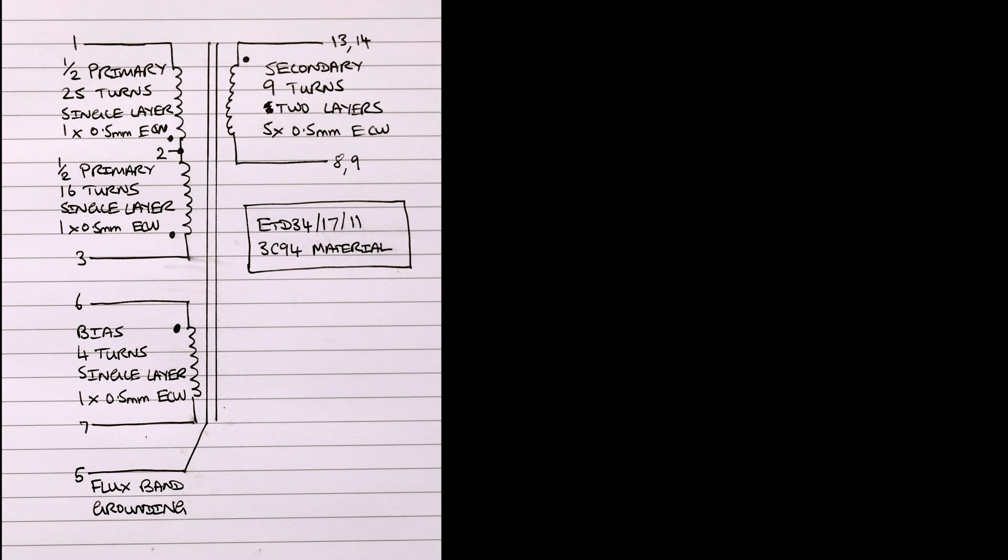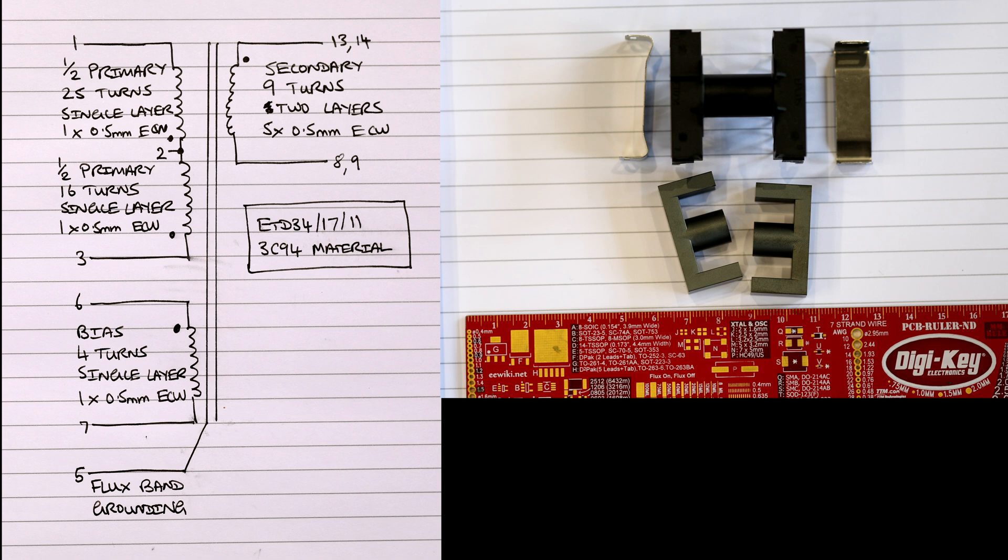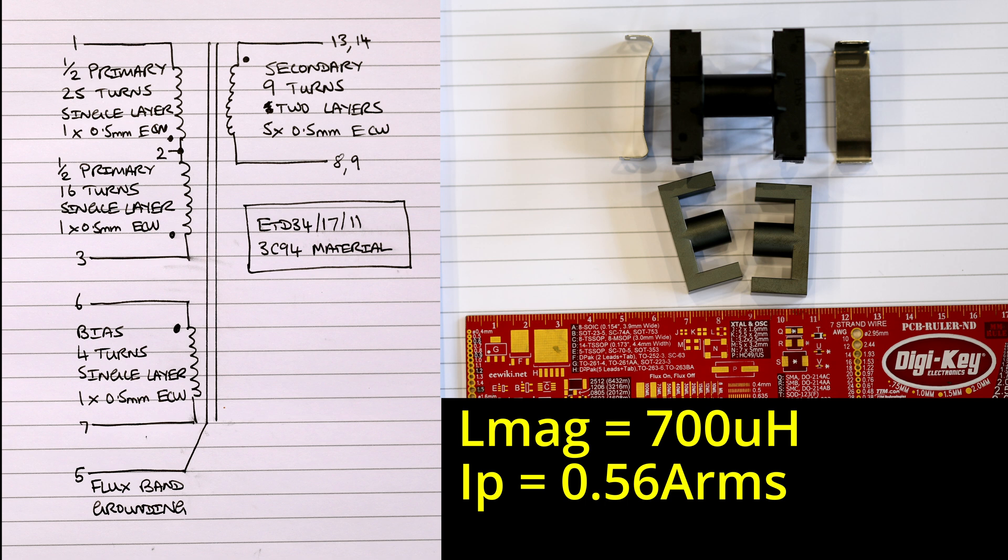The transformer is required to have a primary magnetizing inductance of 700 microhenries whilst supporting worst-case winding currents of 560 milliamps RMS in the primary and 3.9 amps RMS in the secondary.